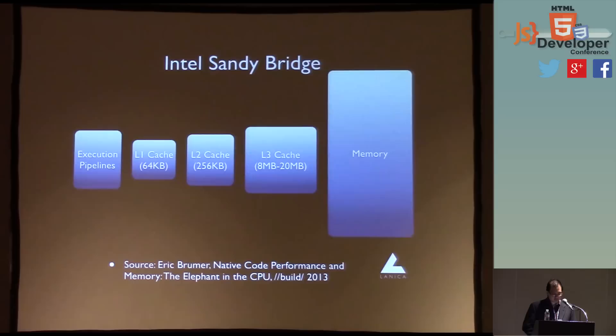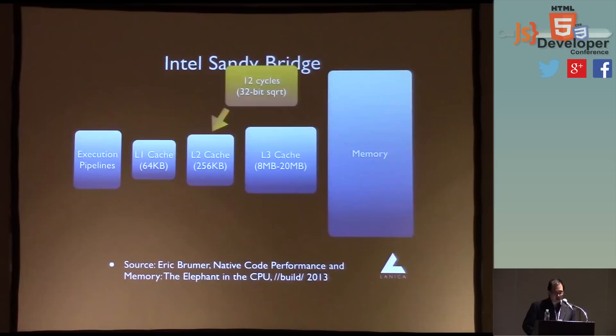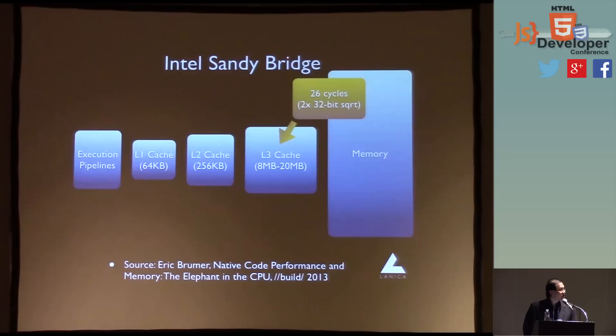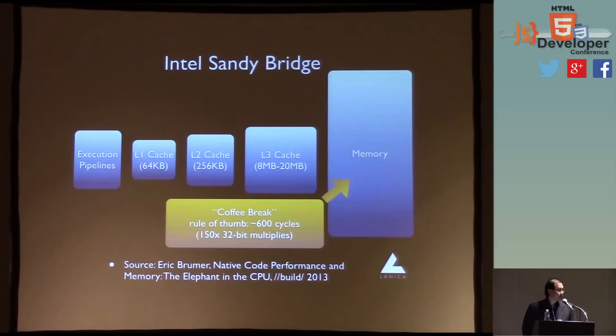In the L2 cache, we jump to 12 cycles. In the time it takes to do 12 cycles, you can do a 32-bit square root. In the L3 cache, that's 26 cycles — in 26 cycles you can do about two square roots. Now main memory — it's actually a lot worse. We have to use rules of thumb. This is where people say it's basically a coffee break, and there are different levels of performance hell when you deal with main memory.